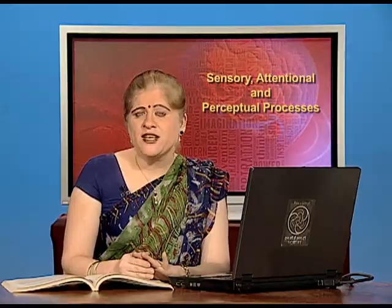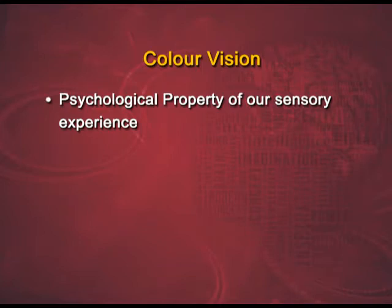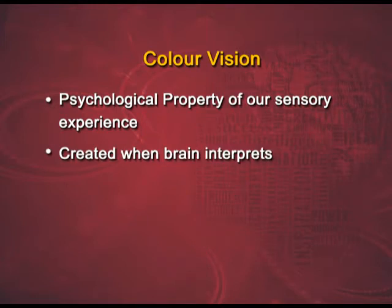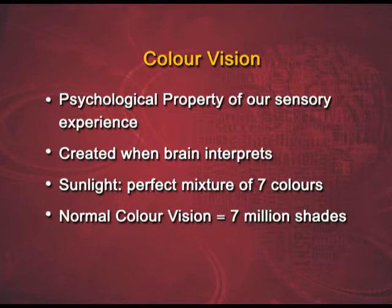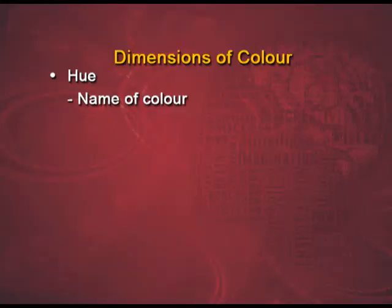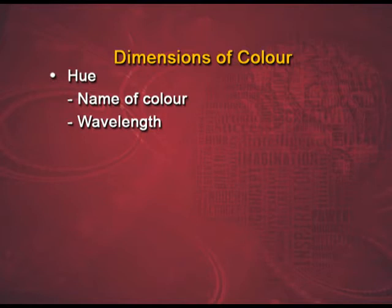The second specialized process that occurs through your eyes is color vision. Sensation of color is a psychological process — it happens in your brain and not through your eye. It is created when the brain interprets the quality of certain substances. Sunlight is a perfect mixture of all seven colors. Normally, a person with normal color vision can see seven million shades. There are different dimensions of color. The first one is hue — the name that you give to a color, measured in wavelengths. For example, blue has a wavelength of 465 nanometers.